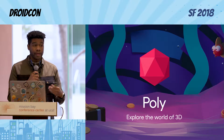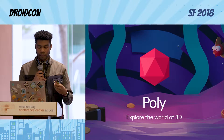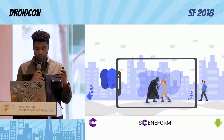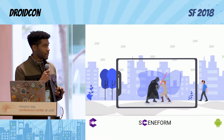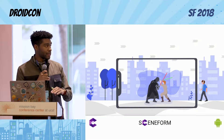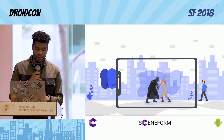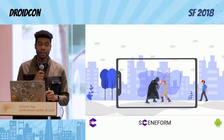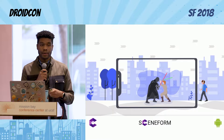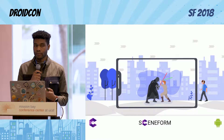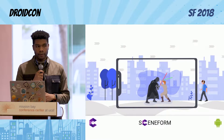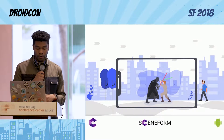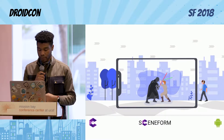They created Sceneform to kind of mitigate that. Sceneform is a companion SDK that just makes it a lot simpler to create AR experiences. It's based off of a scene graph API, which pretty much means it's based off the concept of nodes. It's at version 1.5.1 right now, so it's progressing pretty steadily.